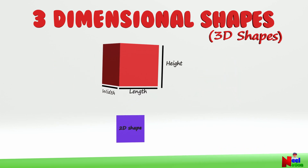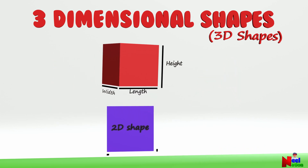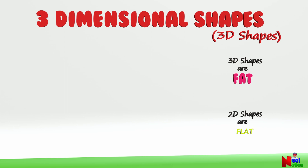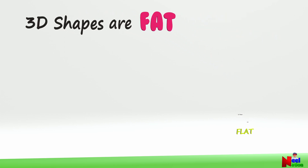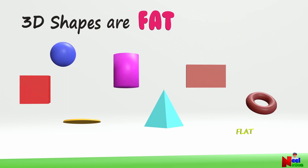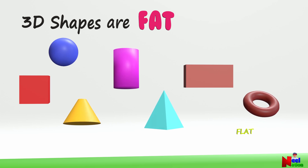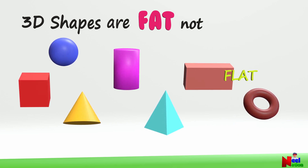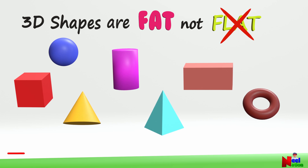Whereas 2D shapes have only 2 dimensions. In other words, we can say that 2D shapes are flat and 3D shapes are fat. 3D shapes are fat, not flat. You got it!